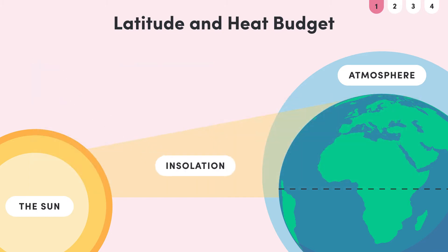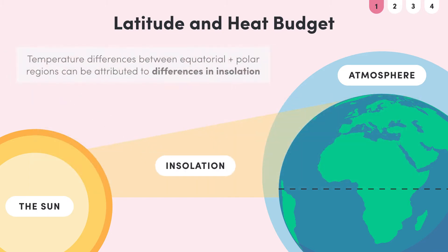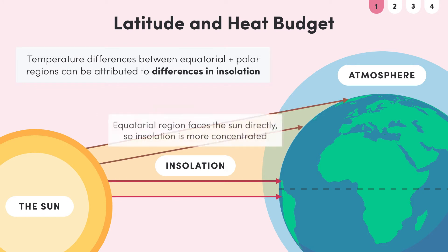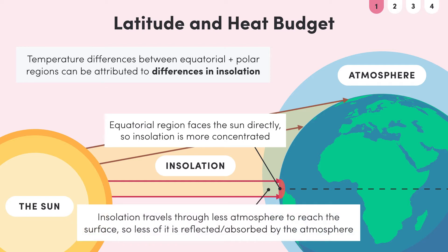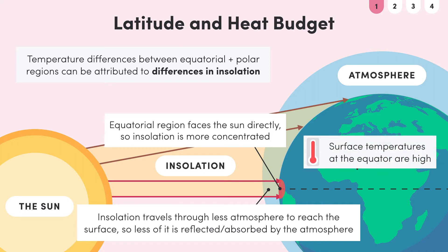The temperature difference between the equatorial and polar regions can be attributed to the difference in insolation at these regions. As you can see in this diagram, the equatorial area of the earth faces the sun directly, meaning insolation is much more concentrated over a small area, leading to more energy at the surface. It also doesn't have to travel through as much atmosphere to reach the surface, so little insolation is reflected or absorbed by the atmosphere. This means that the surface temperatures at the equator are high.